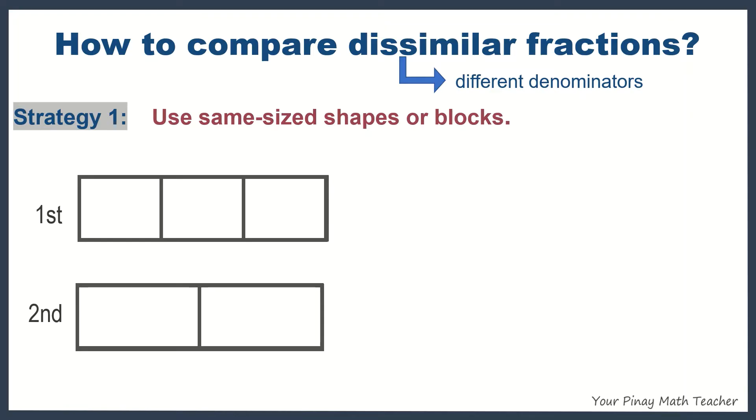then all the fractions that we can generate from these two figures are dissimilar fractions. If I were to shade one out of three in the first figure and one out of two in the second, then we have a fraction for the shaded part for the first figure,